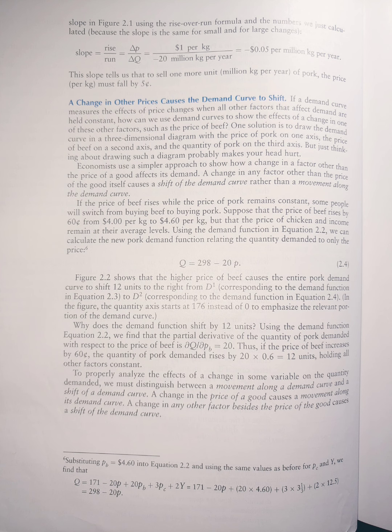If the price of beef rises while the price of pork remains constant, some people will switch from buying beef to buying pork. Suppose that the price of beef rises by sixty cents from four dollars per kilogram to four dollar sixty cents per kilogram, but that the price of chicken and income remain at their average levels.